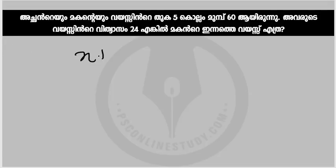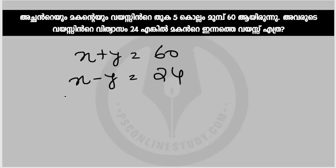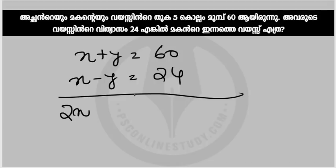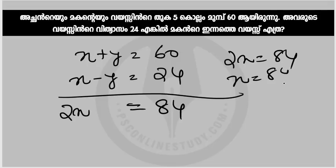Then, x plus y is equal to 60. That's the difference. x minus y is equal to 24 angles. If you look at this angle, we can cancel. x and x is equal to 2x. x plus y minus y is equal to 0, that means x plus y is equal to 24. Now, x plus y is equal to 24. x plus y is equal to 54. There is 42. Then x plus y is equal to 42.